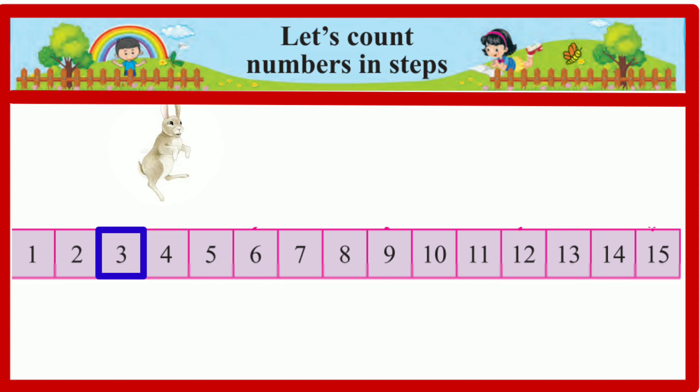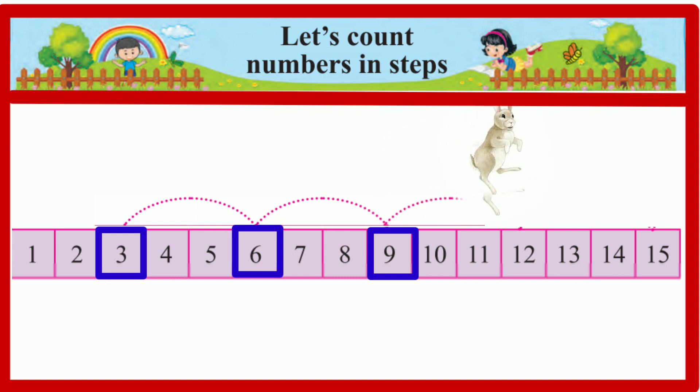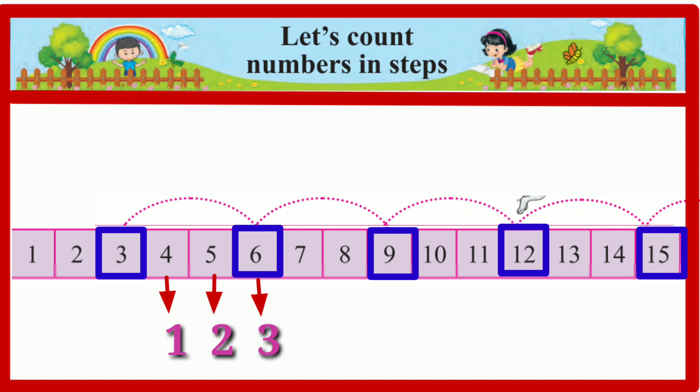Look at the rabbit's jumps. Look at the numbers in boxes from which the rabbit jumped. If we count 3 numbers after the number 3 we get the number 6. On counting 3 numbers after 6 we get 9.